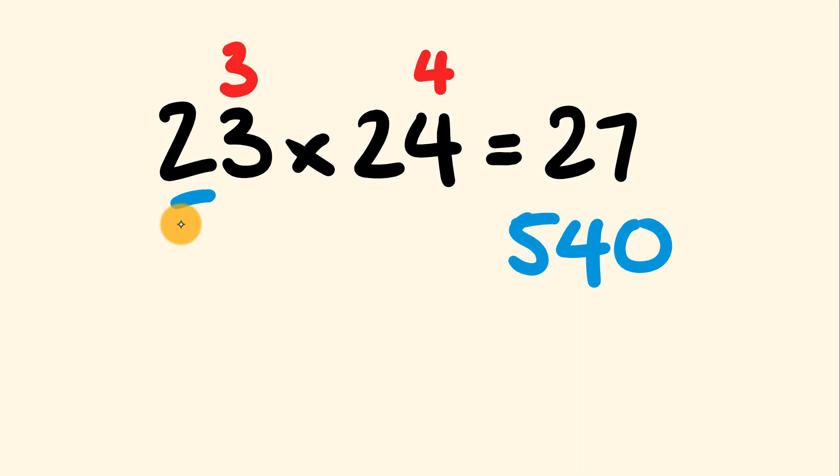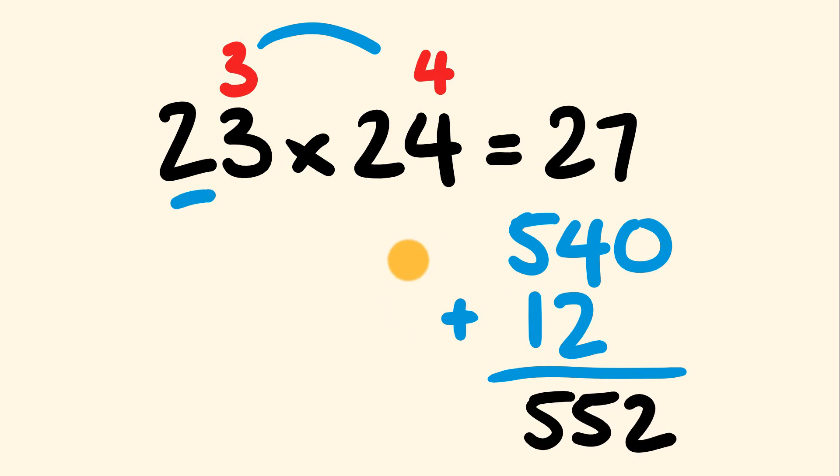54 becomes 540. To this we add, we multiply 3 times 4. 3 times 4 is equal to 12. And we add those together, we will have our answer. 540 plus 12, we have the answer of 552.